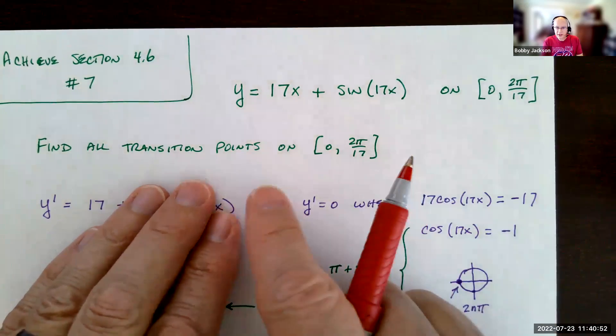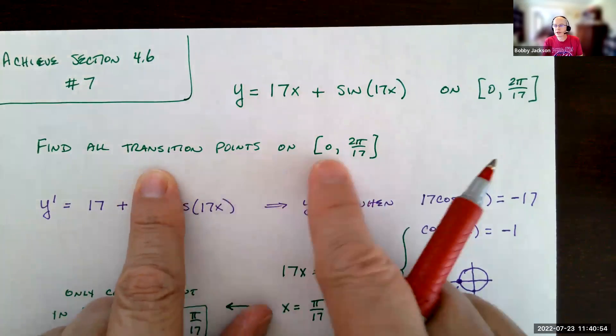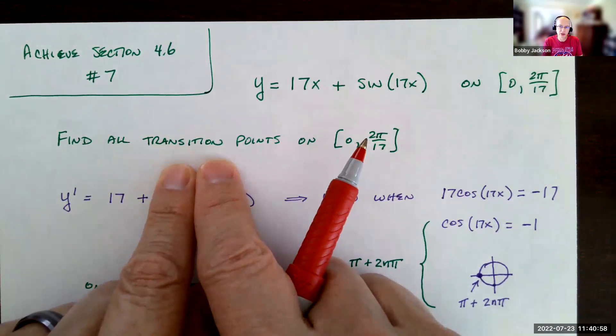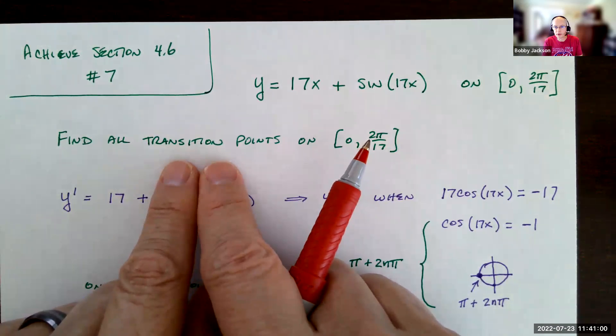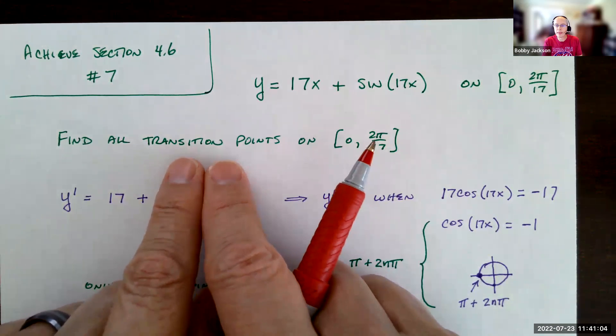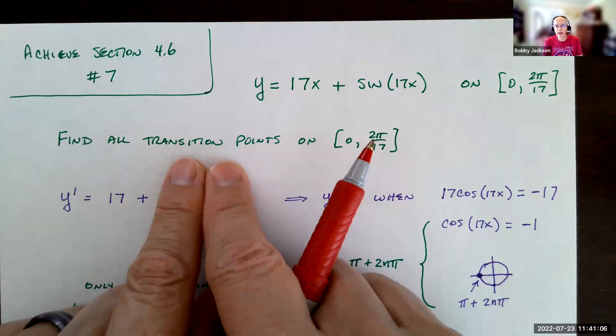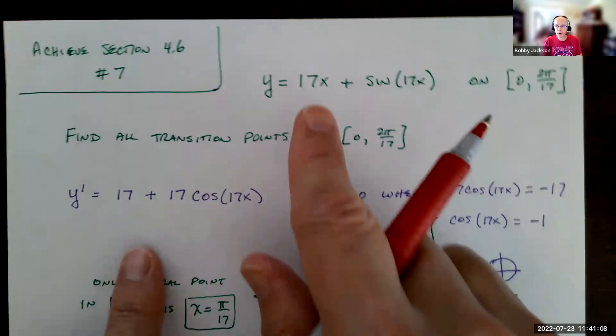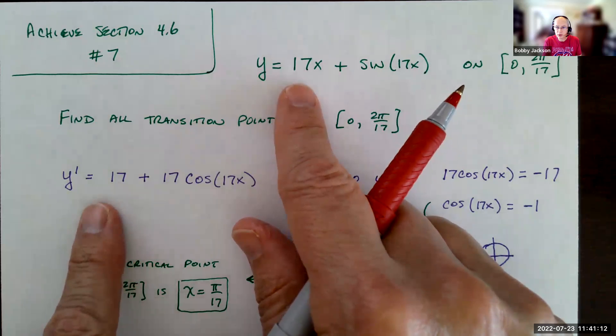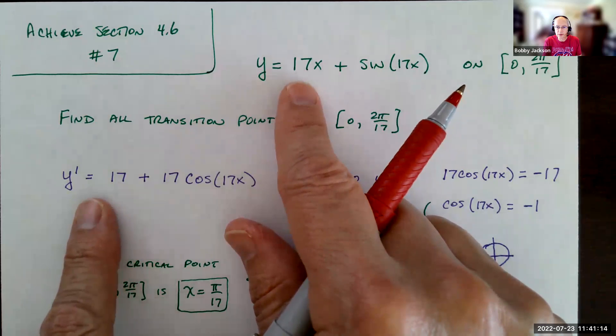You can do the problem without that analysis. We're to find all the transition points on this interval. Transition points, again, are where we have a change from increasing to decreasing, decreasing to increasing, any local extrema or any points of inflection. So to begin with, to find the critical points, which could be transition points, we want to take the derivative.